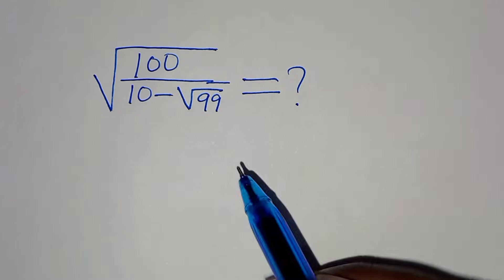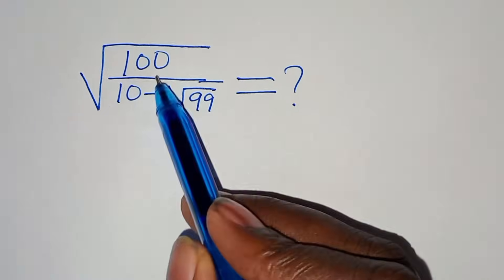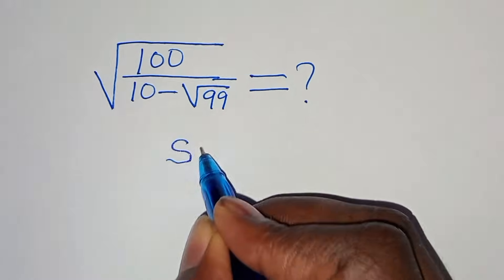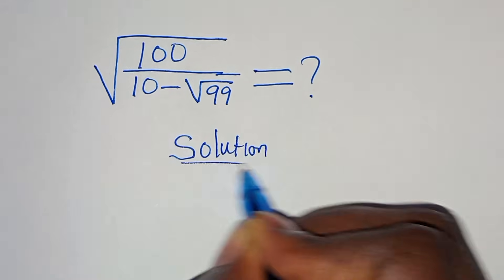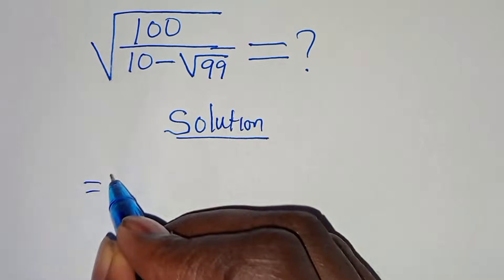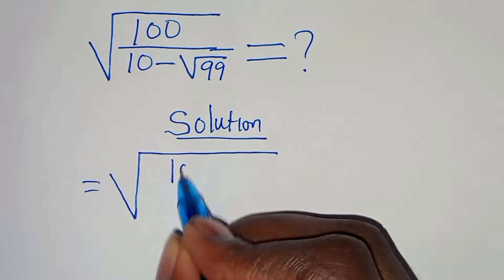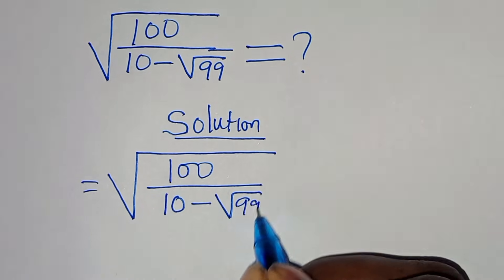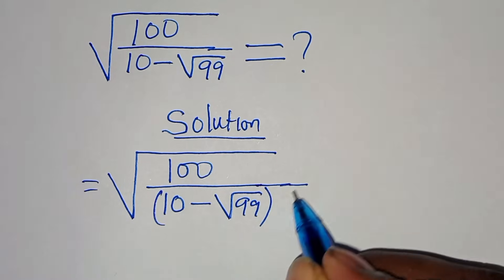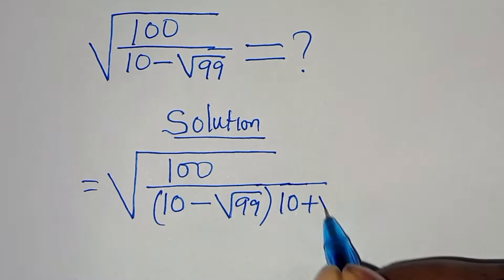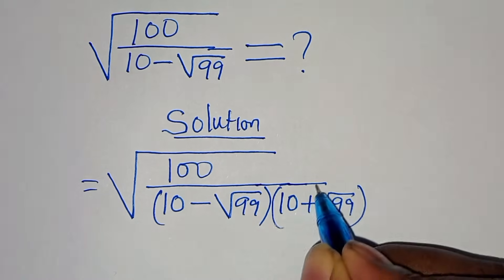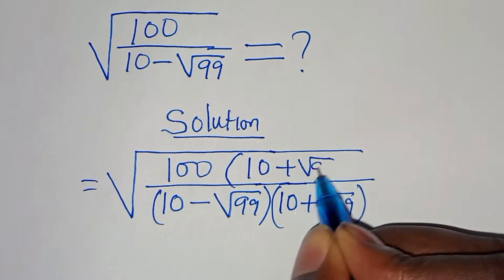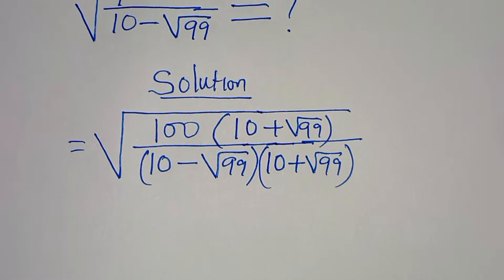Hello everyone, welcome to solve this nice square root math problem, which is the square root of 100 divided by 10 minus square root of 99. The first step is to introduce a conjugate, which is equal to 10 plus square root of 99, and multiply it with the numerator.